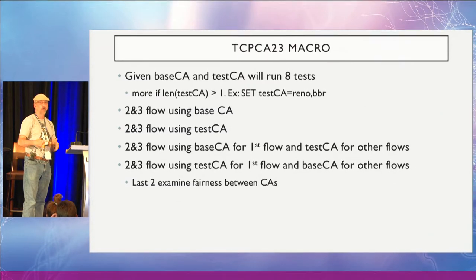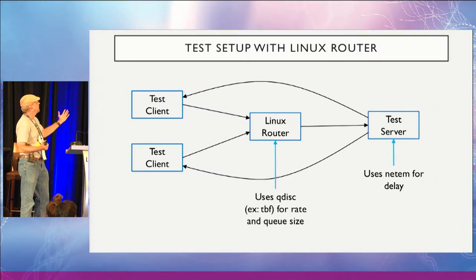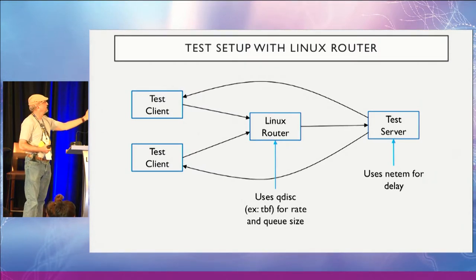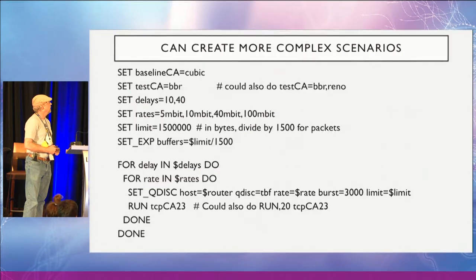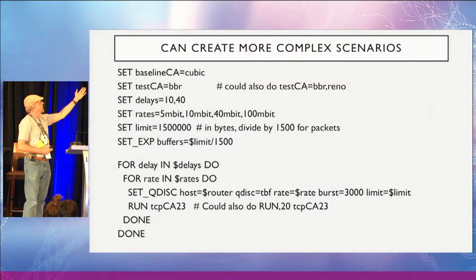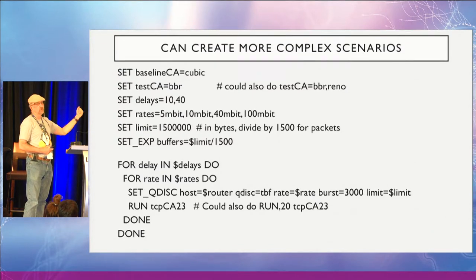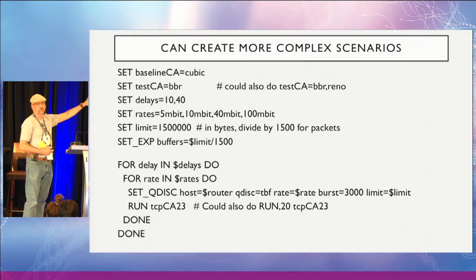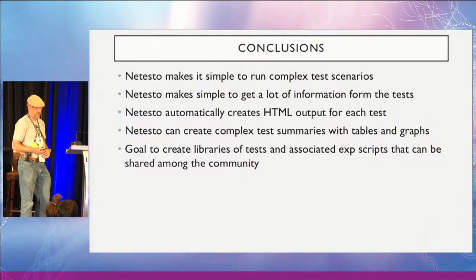In my experience I also set up a Linux machine as a router, use the queuing discipline to set different rate and queue sizes, and use NetEM to set delays. I can very easily write a script with a loop trying two delays — 10 and 40 milliseconds — and four rates between 5 and 100 megabits per second. The TCP CA macro will do eight runs, and with two and four flows that's 64 tests from just that small script. And if you add a comma after the macro name, it will run a whole bunch more repetitions.